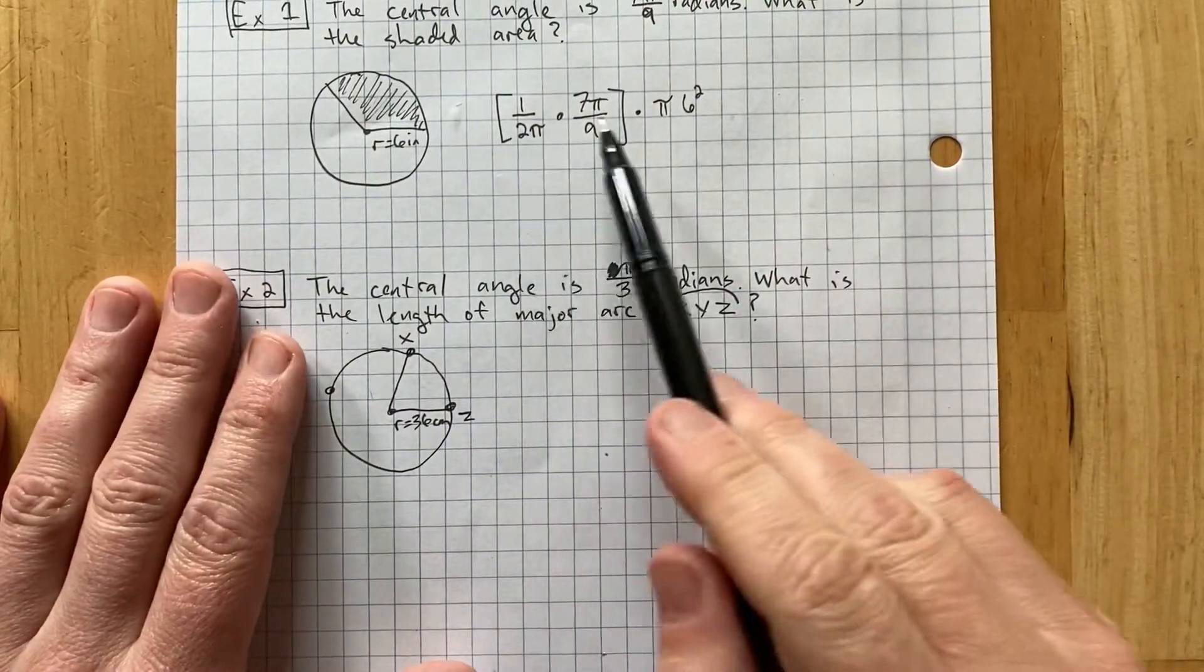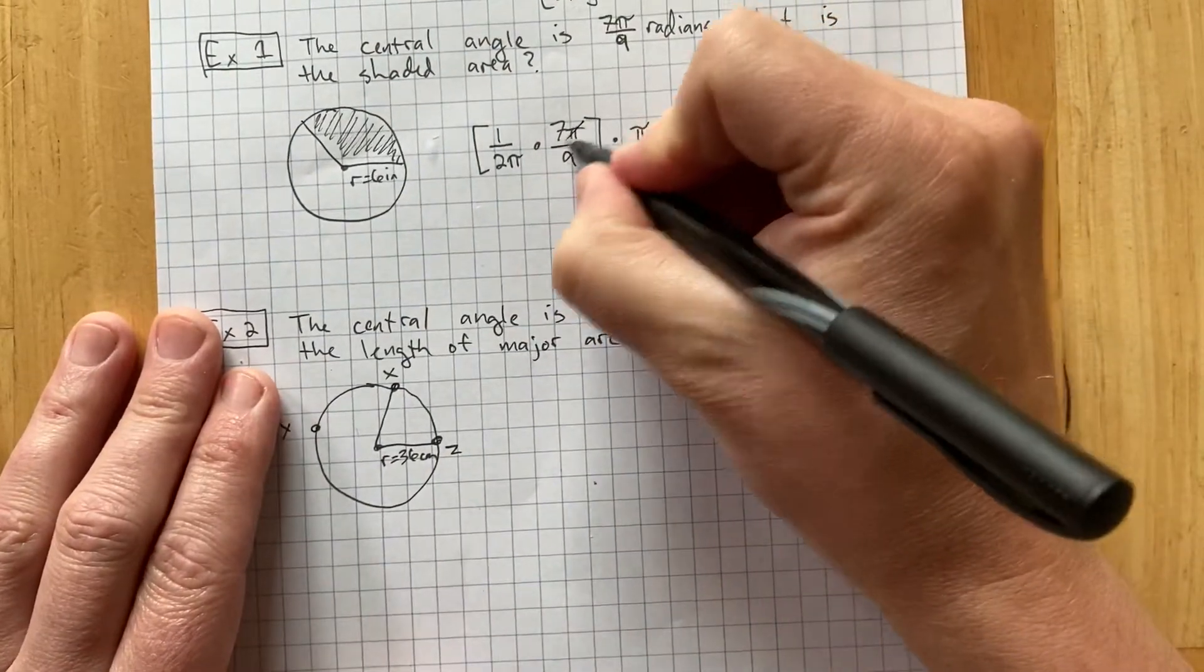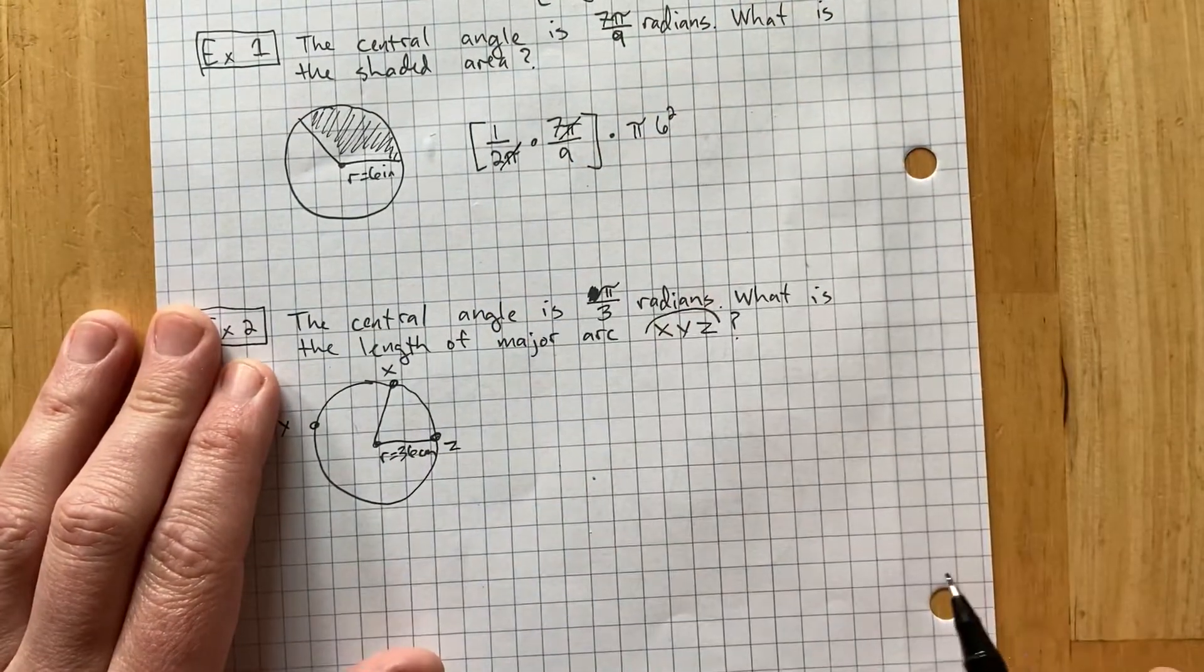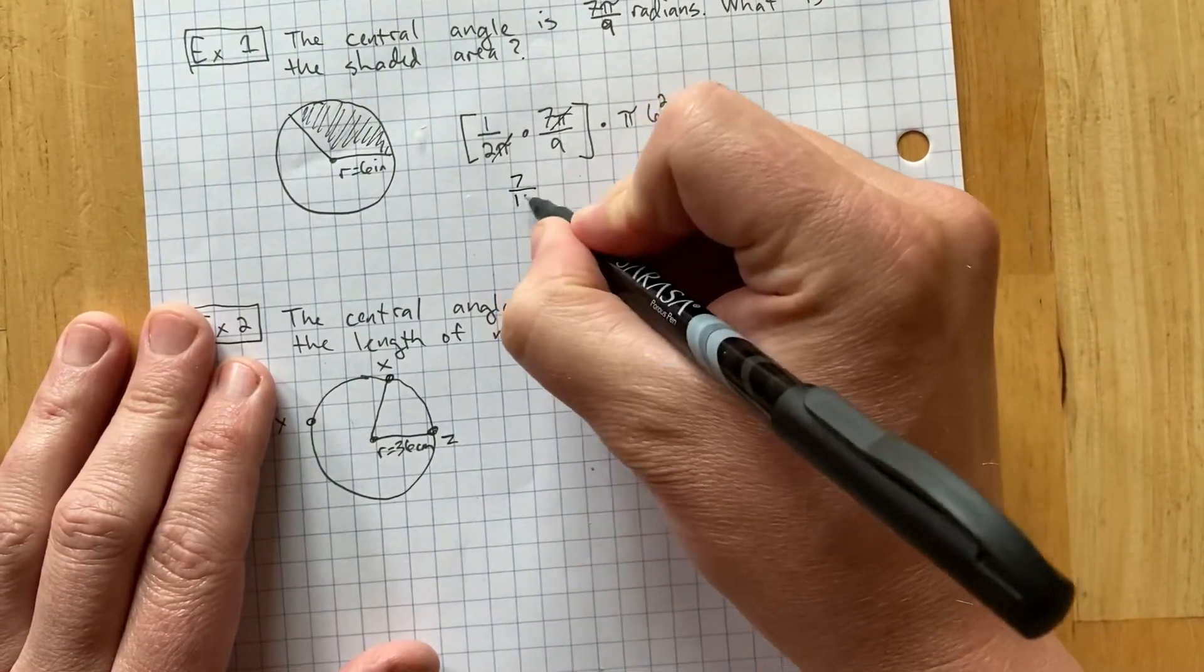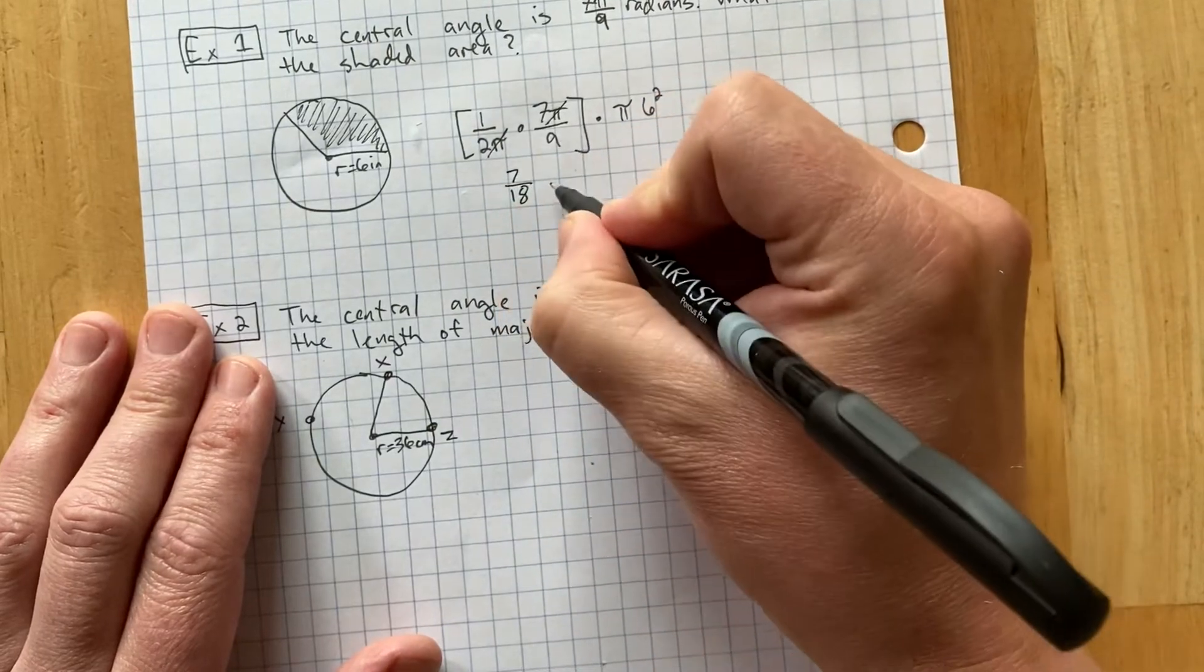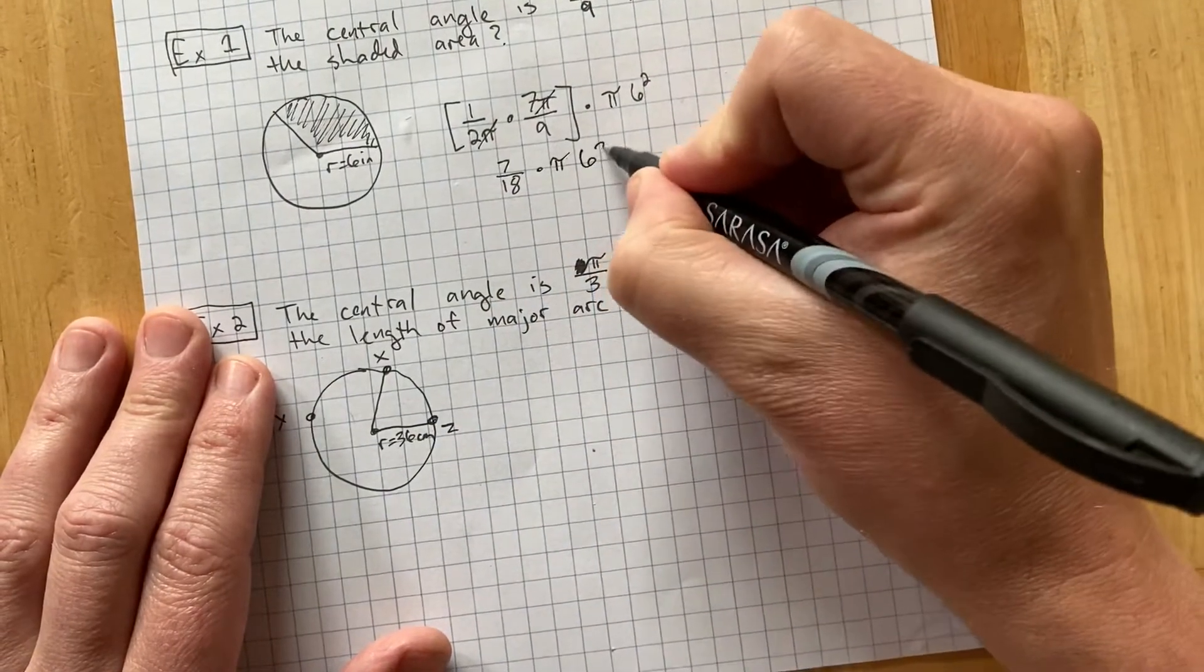And it looks tricky because there's all these pi's and stuff. But notice that there's a pi on top here and a pi on the bottom here. That means the pi's actually cancel. So, we're actually just doing 1 half times 7 ninths. Which is 7 eighteenths. 1 times 7, 2 times 9.